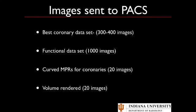For PACS storage, you always want to send your best coronary dataset — generally 300 to 400 images depending on slice thickness and increment. If you've done retrospective acquisition with functional data, store that too — about 100 images per phase times 10 phases equals around 1,000 images. You'll have curved MPRs for the coronaries, probably around 5 images per vessel — so 20–30 images total — and generally at least one volume rendered image of the whole heart for an overview. All in all, you're talking about maybe 1,500 images that you're going to send to PACS and store.